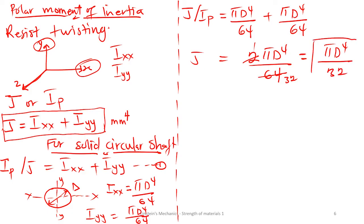For a solid circular shaft, this is the polar moment of inertia formula: J = πD⁴/32. You can just put in the diameter and you'll get the value. This is the derived formula for the circular shaft.